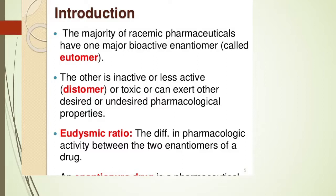The eudismic ratio is a very important term for chiral drug synthesis because it represents the difference in pharmacological activity between the two enantiomers of a drug. Ideally this eudismic ratio must be very, very large — ideally 100 to 0 — but sometimes we get distomers whose ratio affects the biological profile of our drug.